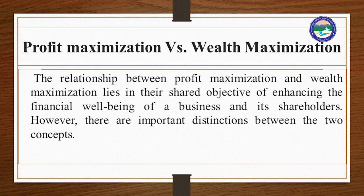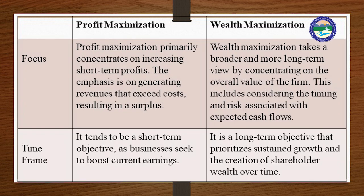Now we will see the relationship between profit maximization and wealth maximization. Their relationship lies in their shared objective of enhancing the financial well-being of a business and its shareholders, but there are important distinctions. In terms of focus, profit maximization primarily focuses on increasing short-term profits — generating revenue that exceeds cost — whereas wealth maximization takes a broader, long-term view by focusing on the overall value of the firm, considering the time and risk associated with expected cash flows.